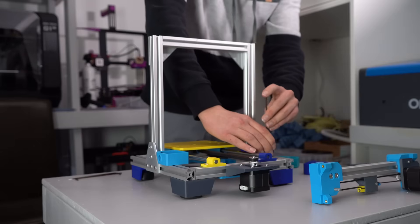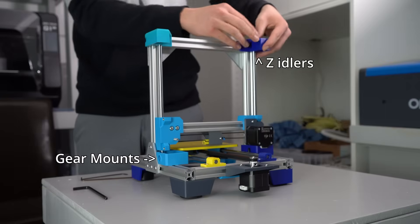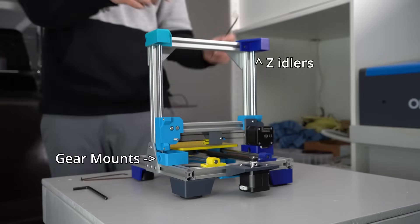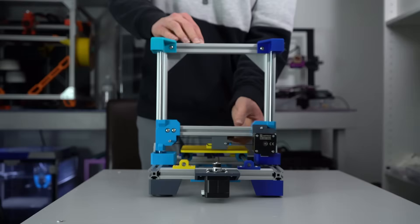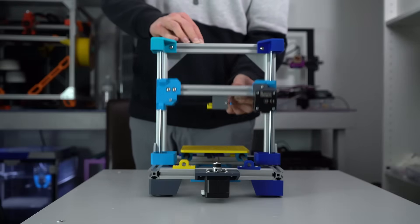The Z-axis rods are secured between the gear mounts on the bottom, and the Z-idlers on the top. With the rods in, the X-axis should be able to easily slide up and down, and you shouldn't feel any binding.